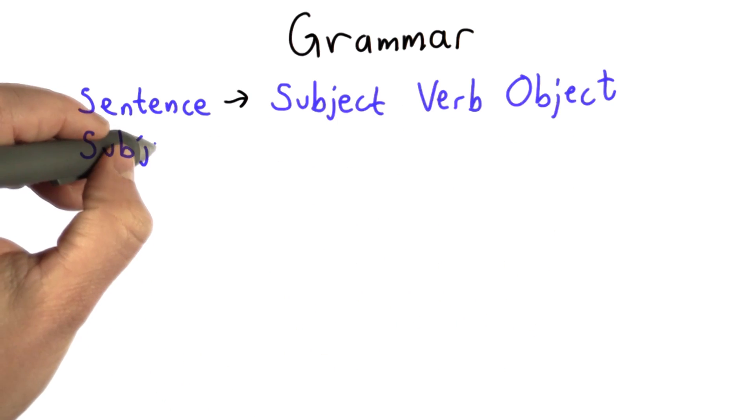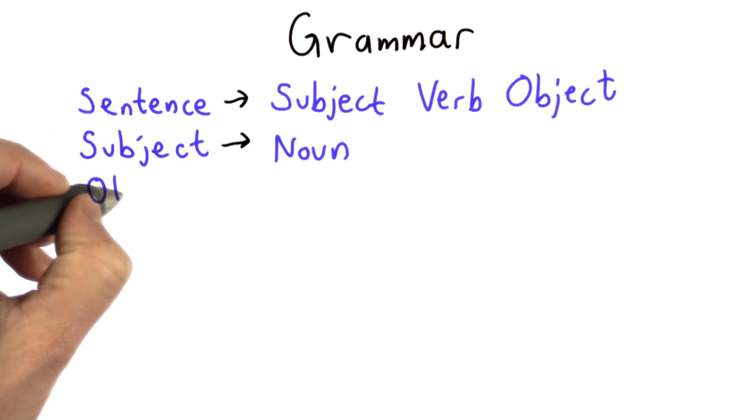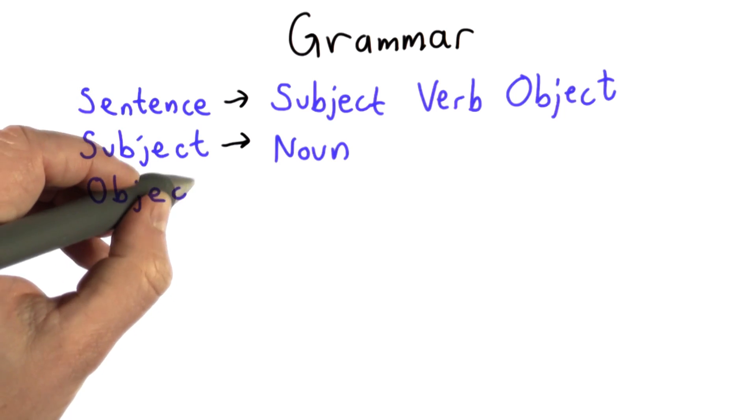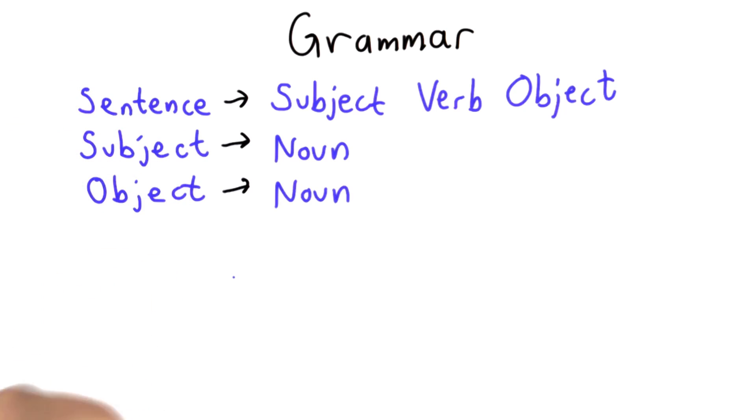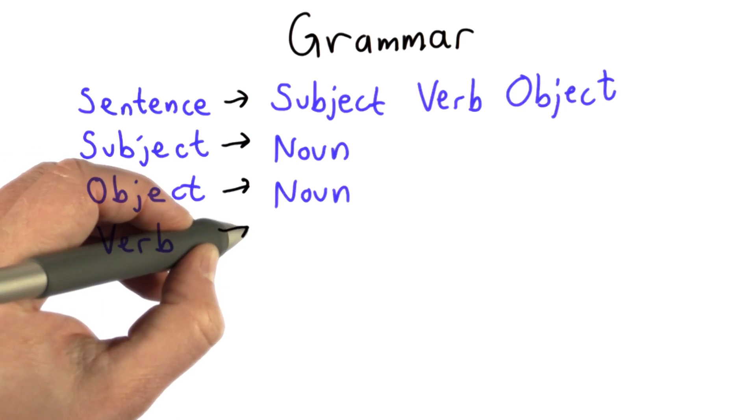The subject could be a noun. The object could also be a noun. And then each of these parts of speech, we have lots of things that could be. So a verb could be the word eat.